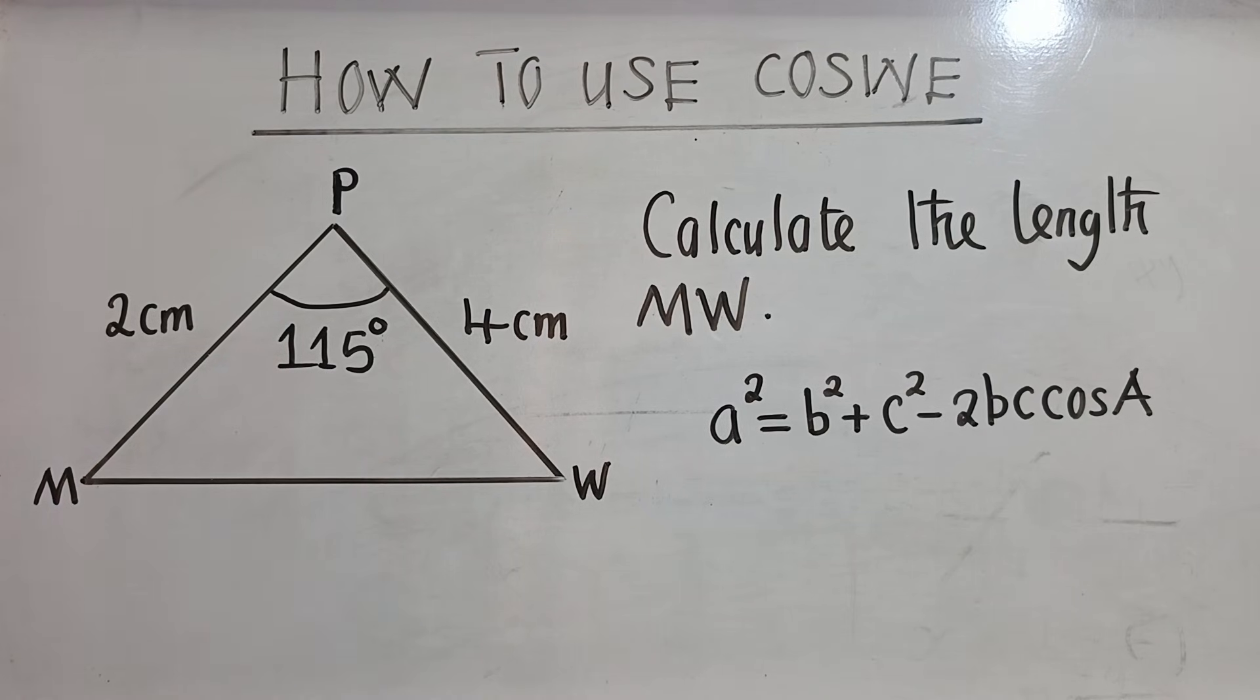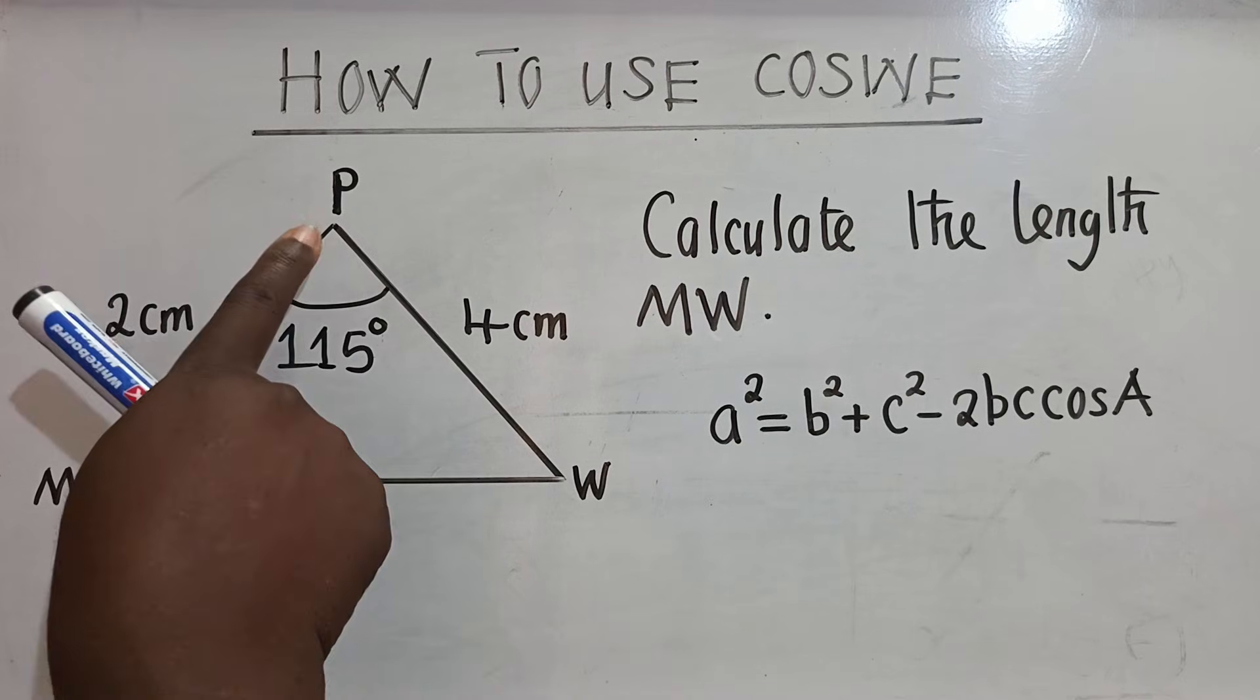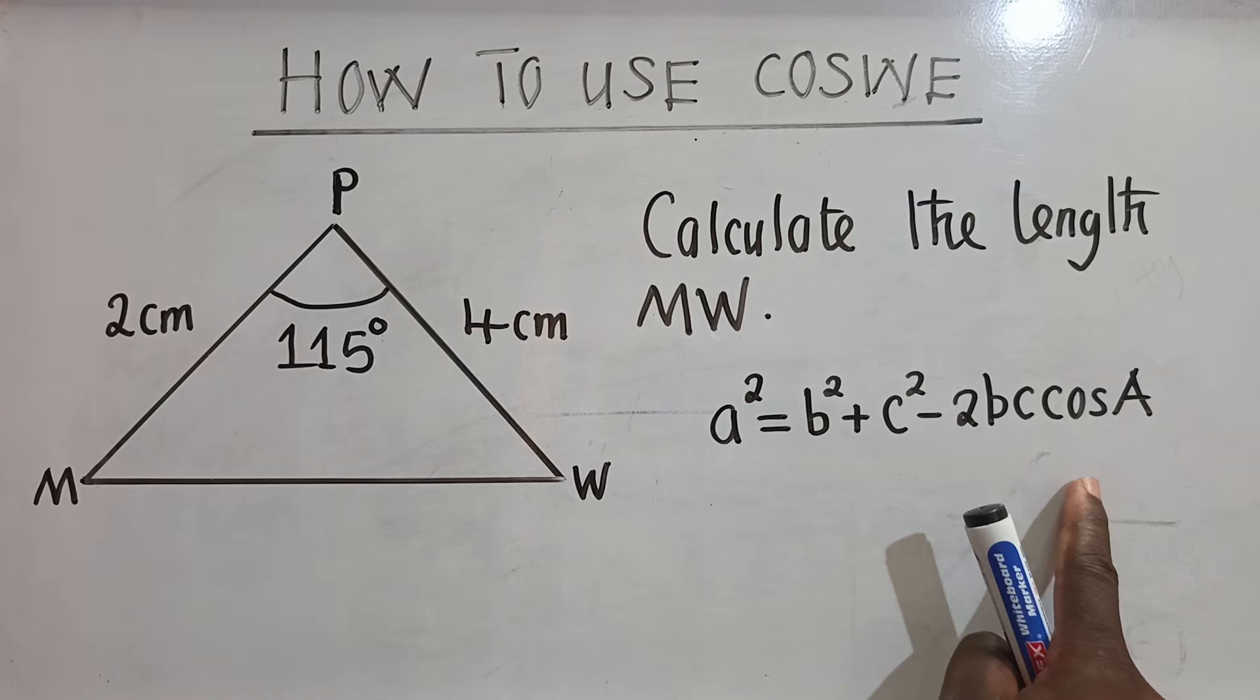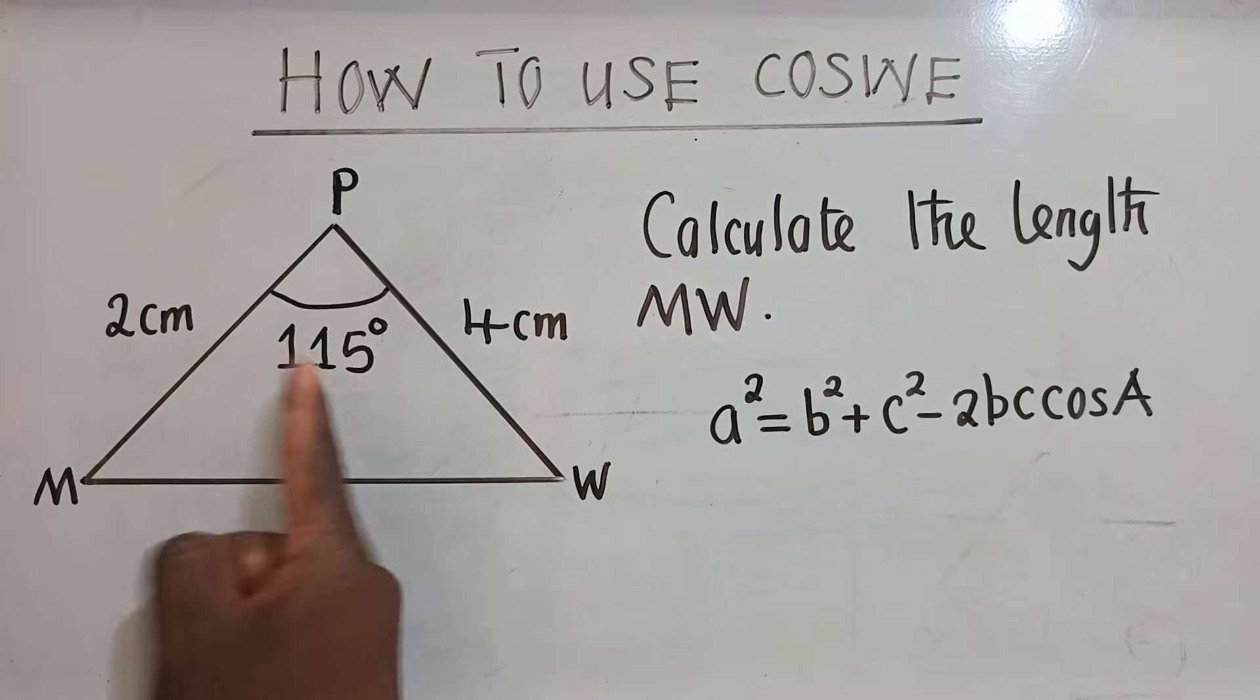Now the letters that we have here, we've got P, W, and M, while here we've got A, B, C if you're able to see. The advice that I can give you is that whenever you see that the letters that you have are different from what is in the formula, you can start with the included angle.